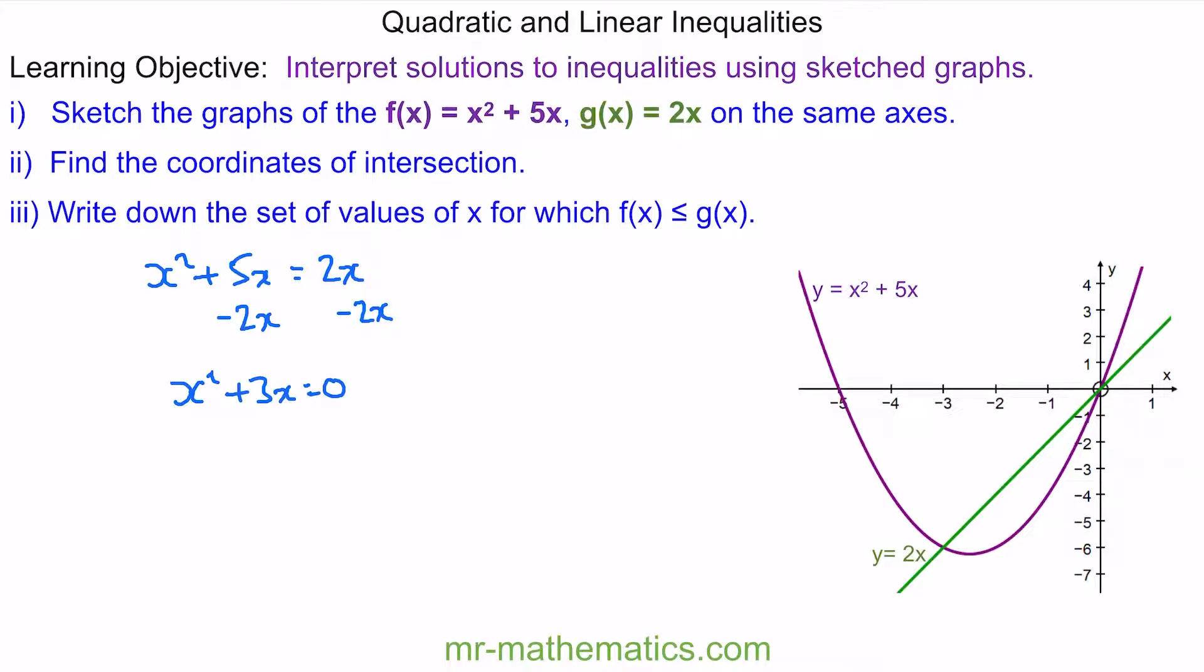Now we can solve this quadratic where we have x lots of x plus 3. So x is equal to 0 and x is equal to negative 3, which are here and at the origin here. Now we know the two x values of the intersections.